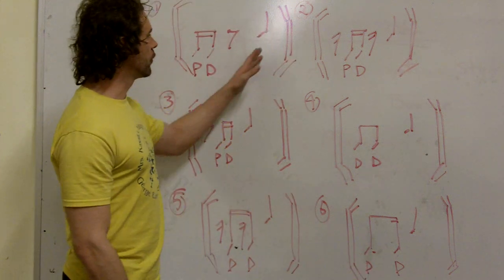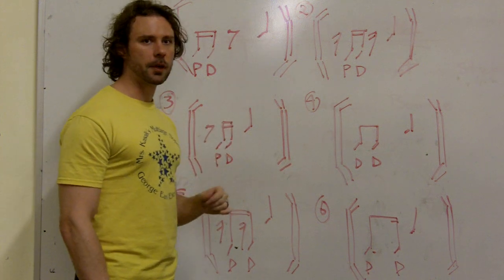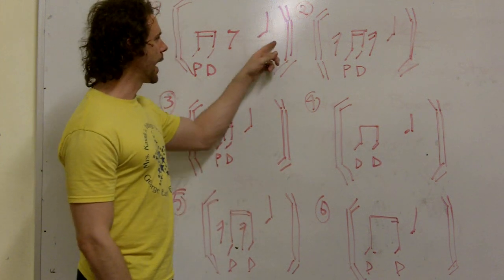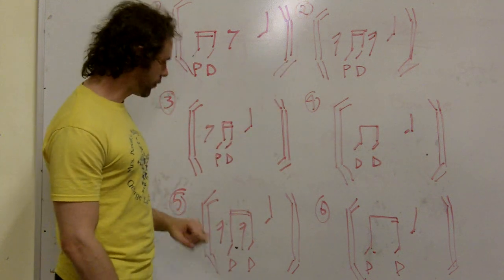You can also use this for any two consecutive 16th notes that may occur after beats two and four. So, E and, and uh, but if you have E, uh, like this after beats two and four, those will both be down strokes.